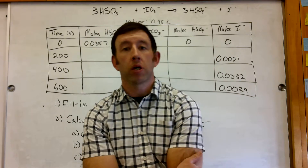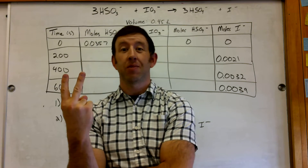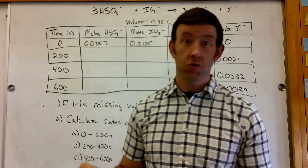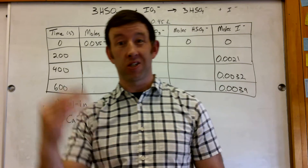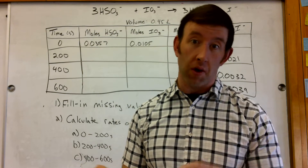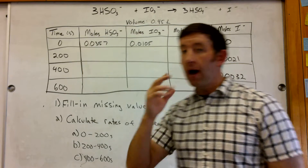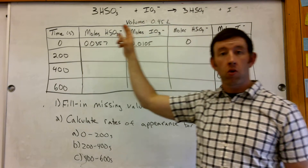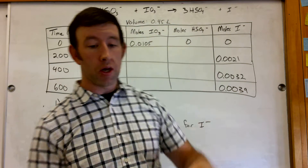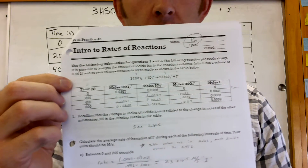Alright guys, so we're going to do our next tutorial on rates of appearance and rates of disappearance for reactants and products. Appearance would be the formation of products; disappearance would be the loss of the reactants as they become the products. I've written the key information up on the board. For those of you in my class, this would accompany KempQuest number 4-2.